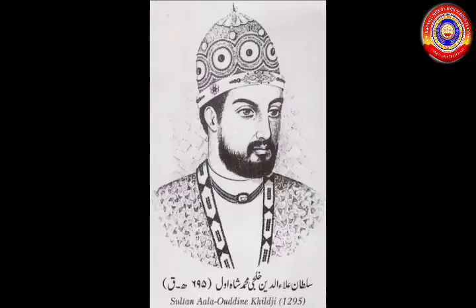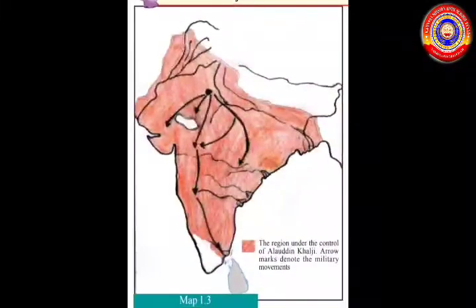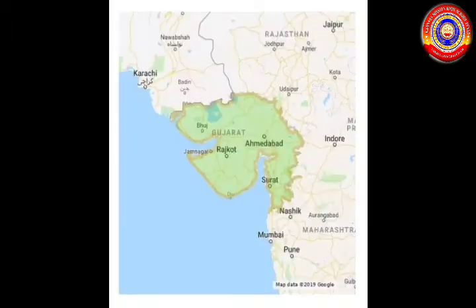Which was the next dynasty after Mamluk? Yes — the Khalji dynasty. The Khalji dynasty succeeded the Mamluk dynasty. The most prominent among the Khalji rulers was Alauddin Khalji. It was during his reign that the south and west regions of India came under the Delhi Sultanate. The first region that came under his control was Gujarat.